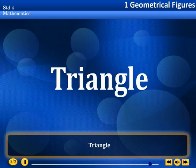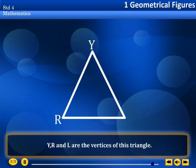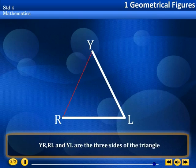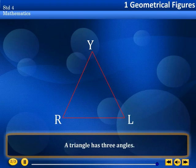Triangle. A triangle has three vertices and three sides. Y, R, and L are the vertices of this triangle. YR, RL, and YL are the three sides of the triangle. A triangle has three angles.